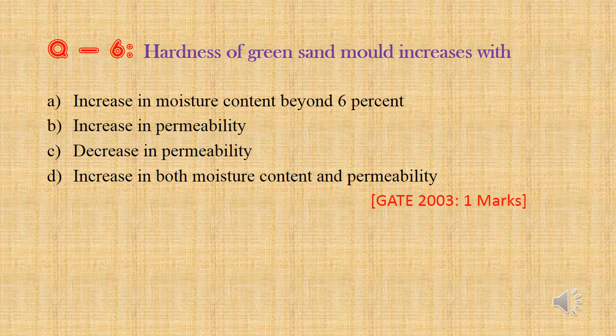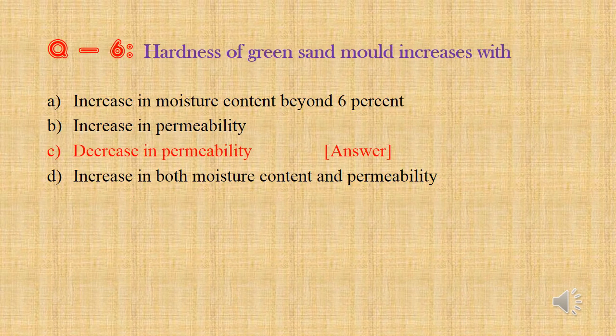Question 6: Hardness of green sand mold increases with — Option a: Increase in moisture content beyond 6%, Option b: Increase in permeability, Option c: Decrease in permeability, Option d: Increase in both moisture content and permeability. Decrease in permeability of molding sand increases the hardness of green sand mold. So the answer is Option c: Decrease in permeability.